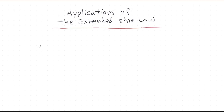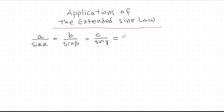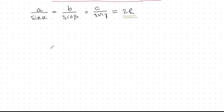In this video we will look at a few interesting applications of the extended sine law. In the last video I showed that for any triangle the sine law — a over sine alpha equals b over sine beta equals c over sine gamma — is also equal to 2R, the radius of the circumscribing circle going through vertices A, B, and C. This makes the sine law a lot more powerful, and we will look at some interesting applications.